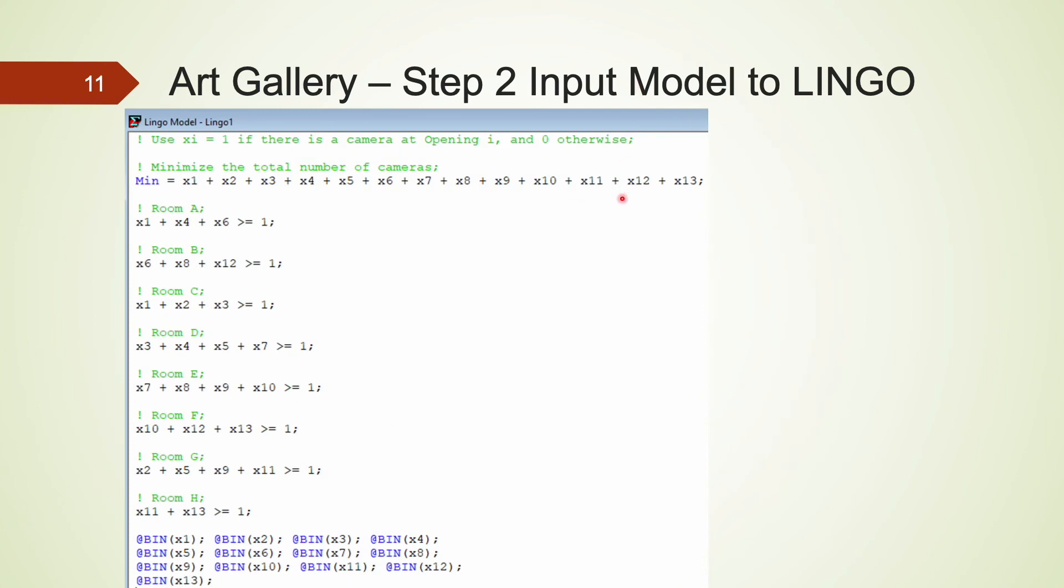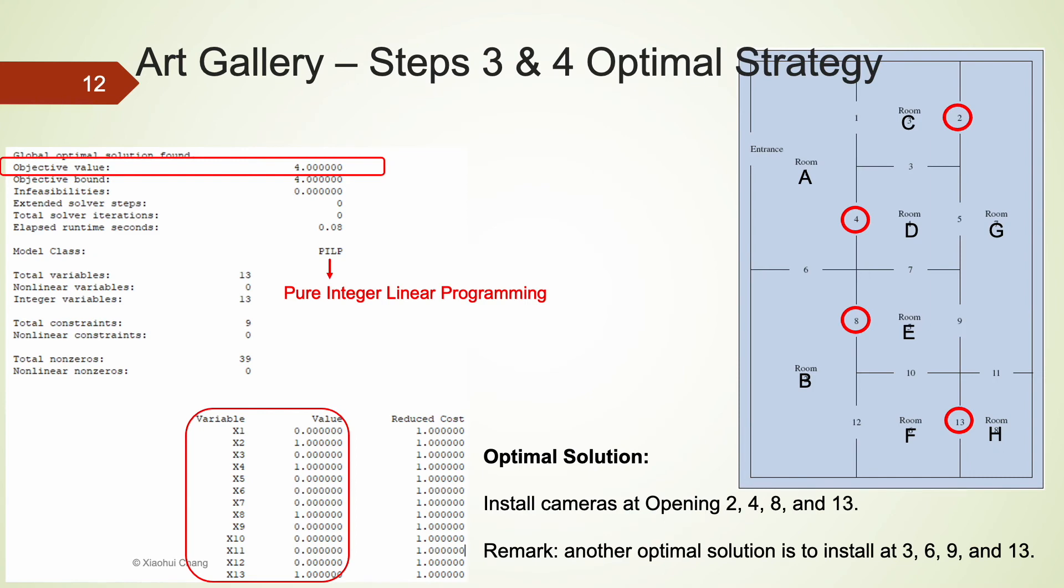Here is the complete LINGO model. We have a minimization problem to solve, with 13 binary variables and 8 constraints. After clicking on the target or solver icon in LINGO, we obtain this printout.